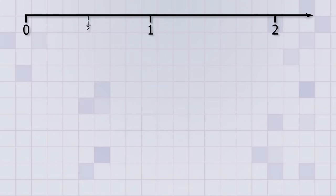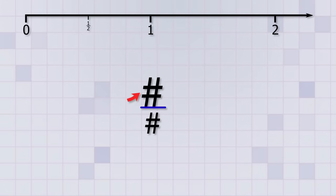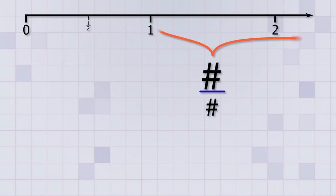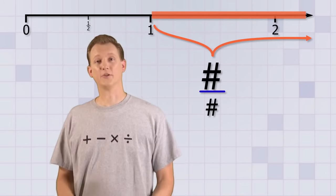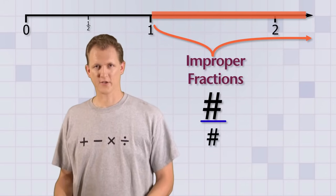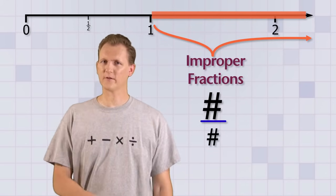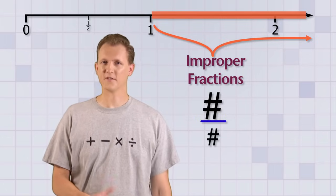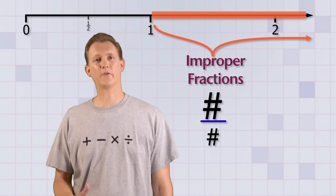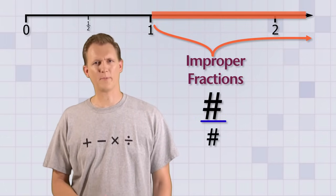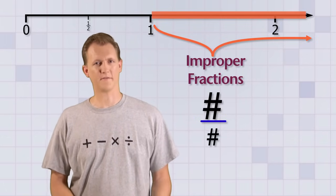Our last rule is this: if the top number is greater than the bottom number, then the value of the fraction will be bigger than 1. That means it'll be somewhere in this section of the number line, which goes on forever. These are called improper fractions because even though they're written like regular fractions, since their value is greater than 1, they aren't really used to represent smaller parts of things.